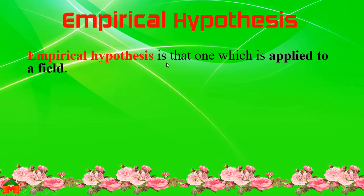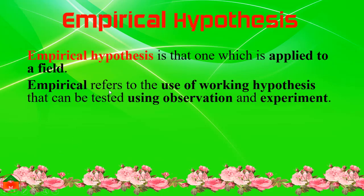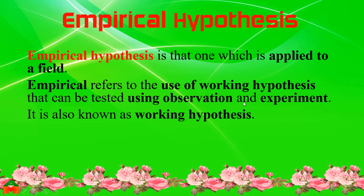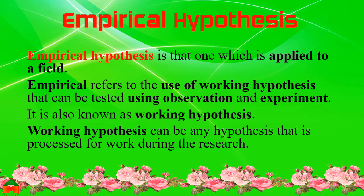Empirical Hypothesis is one which is applied to the field. Empirical refers to the use of a working hypothesis that can be tested using observation and experiment. It is also known as working hypothesis. A working hypothesis can be any hypothesis that is processed for work during the research.